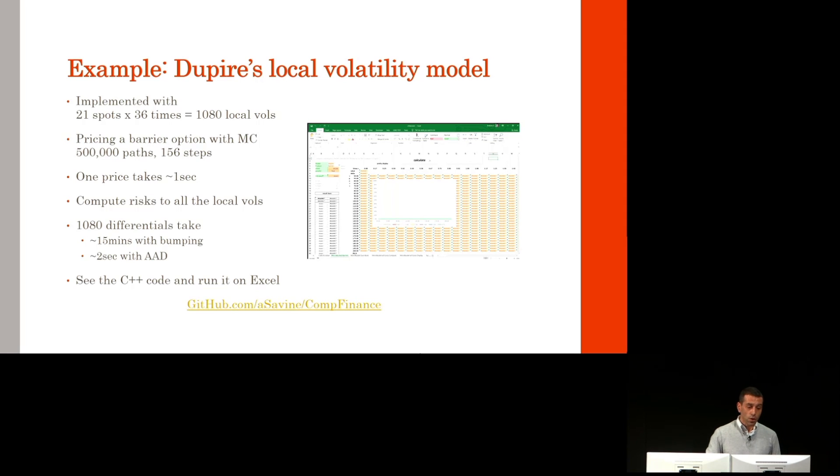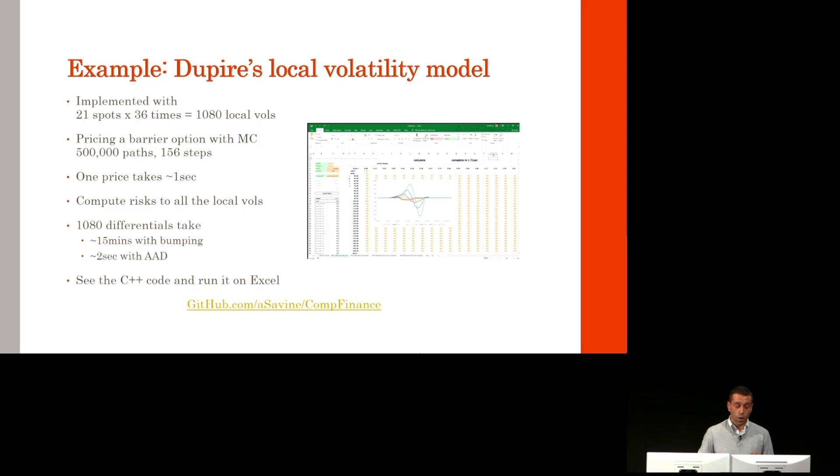We want to compute the risks to all the local vols. That's 1,000 differentials to calculate. It would take 1,000 seconds or 15 minutes with bumping. With AAD, we get them in less than two seconds.